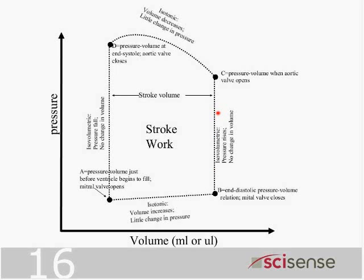At this point, the pressure in the ventricle exceeds the pressure in the aorta, which is held by the recoil of the aorta, and the aortic valve opens. Then we see the ventricular pressure goes up a little, but the volume changes a great deal. The distance between those two points is the stroke volume, which can be measured very accurately by a pressure-volume loop.